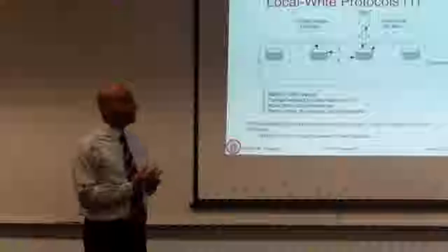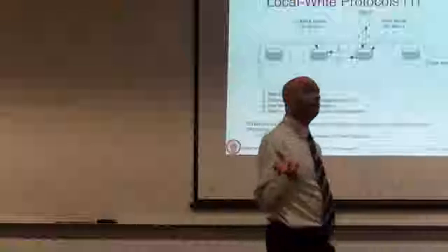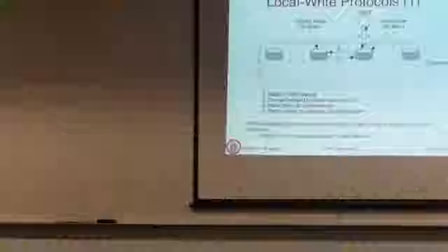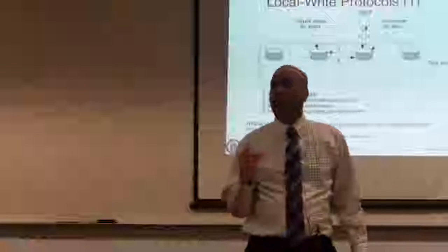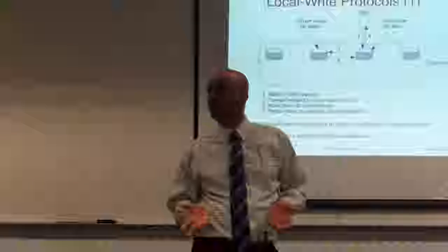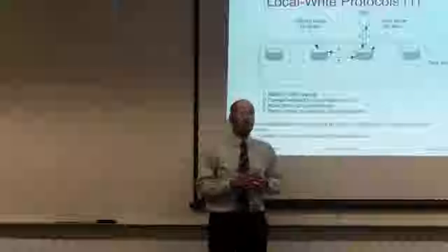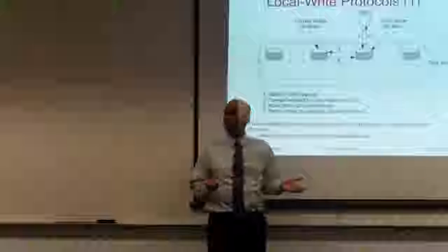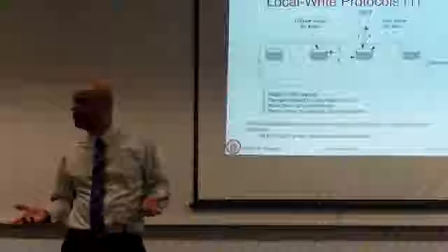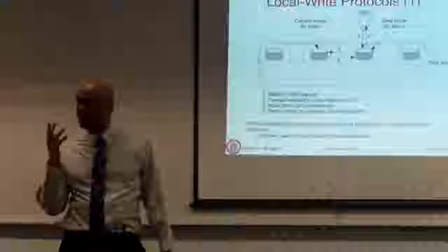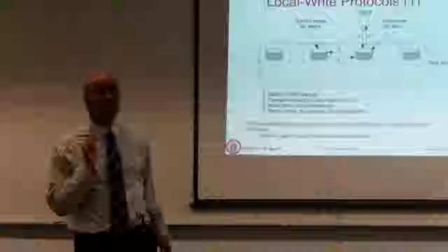Here is a different protocol that tries to make writes local. In the remote write protocol, the primary was remote to where the client was updating the data item. In a local write protocol, when the client starts writing to a file or data item, the local node essentially becomes the primary. The role of the primary can move across machines because there are K replicas, and you can pick the primary node dynamically depending on where the write is occurring.